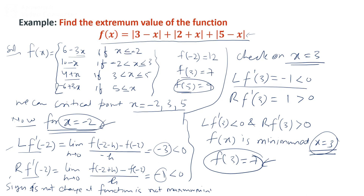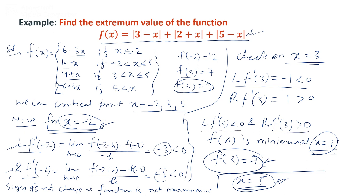For the critical point x = 5, please try it yourself. Check the left-hand and right-hand derivatives and their signs. If the sign does not change, the function is neither maximum nor minimum. If the left-hand derivative is less than zero and the right-hand derivative is greater than zero, the function is minimum. If reversed, the function is maximum at that point.